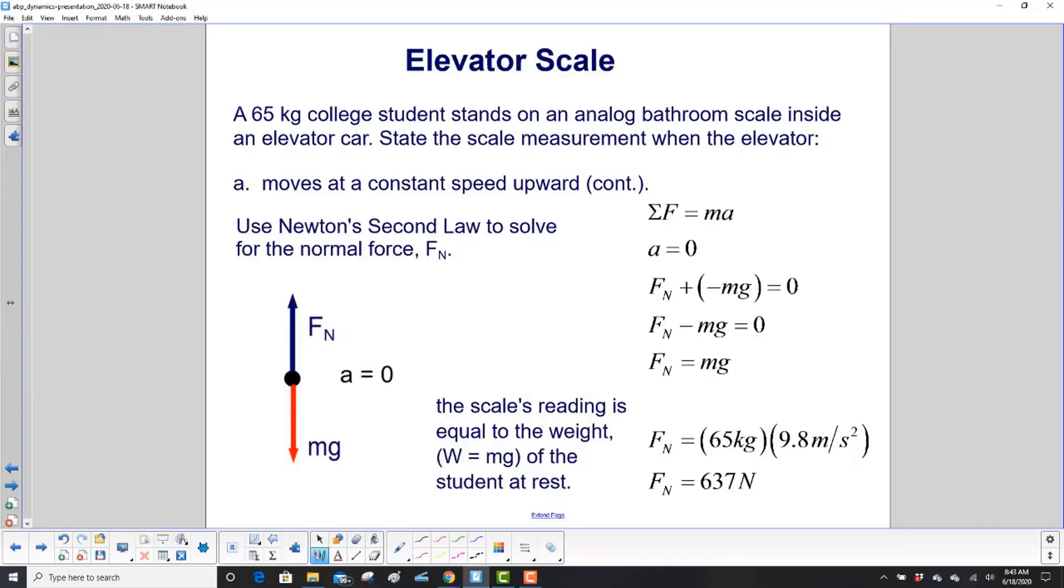Once we have the free body diagram, we can then apply Newton's second law. So the sum of the forces is ma. Our acceleration is zero. So the equation becomes the normal force, which is in the upward direction, so it has a positive sign. Gravity is pulling down. So we have negative mg. And since the acceleration is equal to zero, the vector sum is equal to zero. So we have the normal force minus mg equals zero. Add mg to both sides. It cancels out on the left, winds up on the right. We have the normal force is mg.